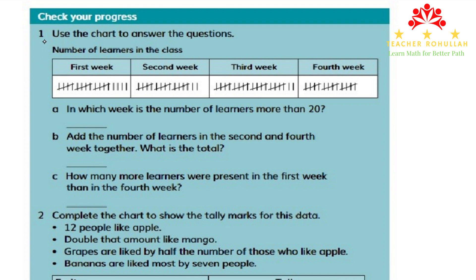The first question is asking us to use the chart to answer the questions given below. In this part, the numbers of students are listed for four weeks: the first week, second week, third week, and fourth week. We will answer the three following questions about the information in this chart.